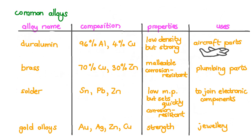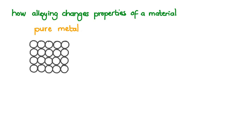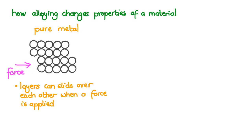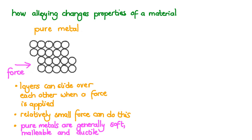Exactly how does alloying change the properties of a material? In solid pure metal the atoms are arranged in layers and rows bonded by metallic bonds. The layers can slide over each other when a force is applied. Only a relatively small force is needed to do this in a pure metal. That is why pure metals are generally soft and rather malleable and ductile.